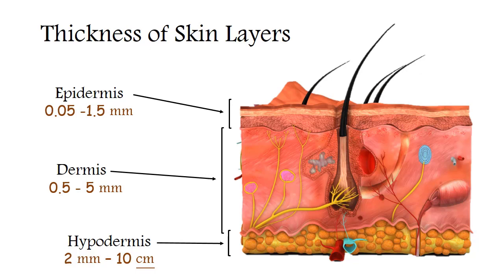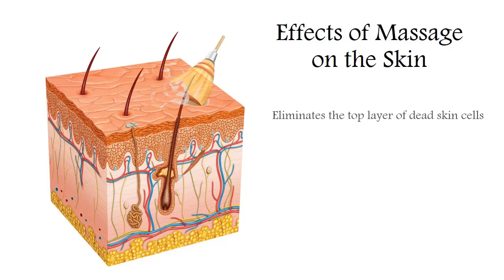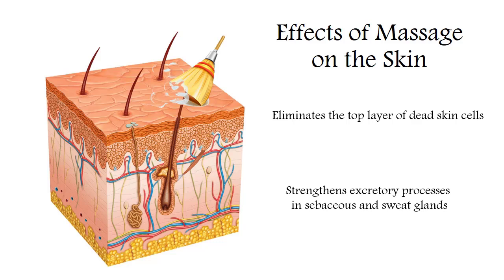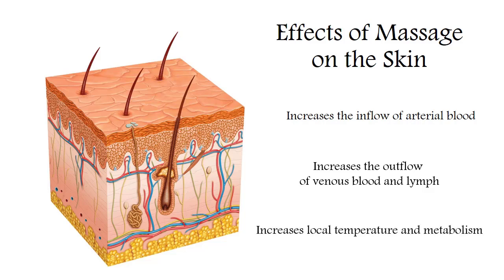Now let's see how massage affects our skin, moving from the surface to deep layers. In the epidermis, thanks to massage, superficial dead cells are removed better, and this in turn facilitates and improves the work of the sweat and sebaceous glands. In the dermis, massage increases the inflow of arterial blood, and with it comes more oxygen and nutrients. Also massage enhances the outflow of venous blood and lymph, which has an anti-edematous effect. As a result, local temperature and metabolism increase, unnecessary substances begin to remove more quickly, and vice versa, the necessary substances and structures begin to form.